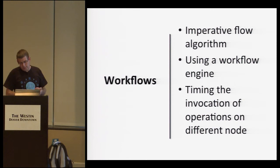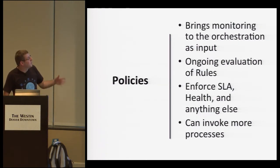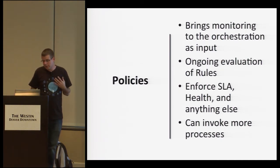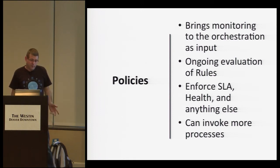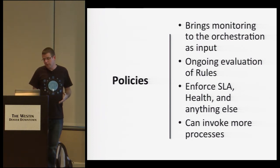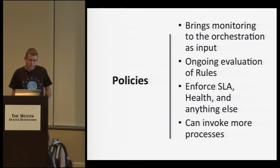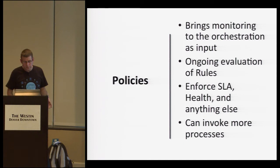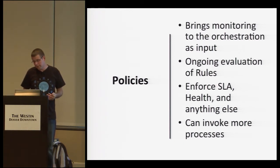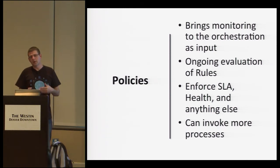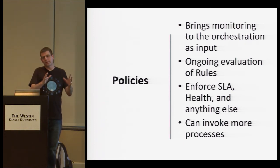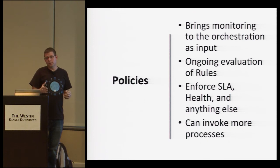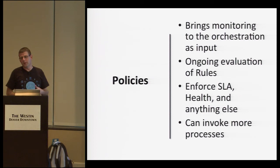The last building block I want to talk about are policies. From our perspective, policies bring monitoring to the table. Monitoring is very important — unless you have monitoring, it's very hard to know if what you're doing actually happened and if it's still up and running. If you can monitor, you can set rules to enforce things like SLA, health, performance, and anything else you need. If a policy — which is a set of rules evaluated continuously — says something is wrong or not allowed, you can invoke another process to fix that. You have an ongoing feedback loop feeding back into your orchestrator, allowing you to remediate your application or scale it out or in. It's an ongoing process, so no manual intervention is needed even after deployment.